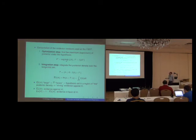The computation of the evidence consists in two steps. The first one consists in finding the maximum or supremum of the posterior under the hypothesis. And the integration step consists in integrating the posterior density in the tangential set. The tangential set is defined as the region of the parameter space with density higher than F star, higher than the maximum under the hypothesis.